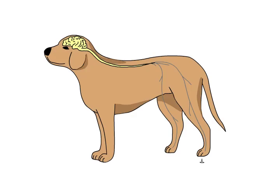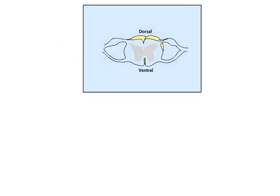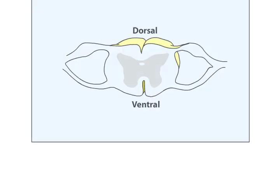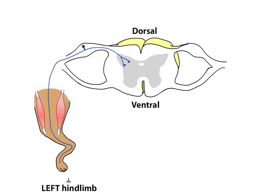The spinal cord receives and processes information from the body. The spinal cord is also the final common pathway for most voluntary and involuntary reflexive movements. In this animation, we'll examine the spinal pathways involved in the withdrawal of a limb from a painful stimulus.